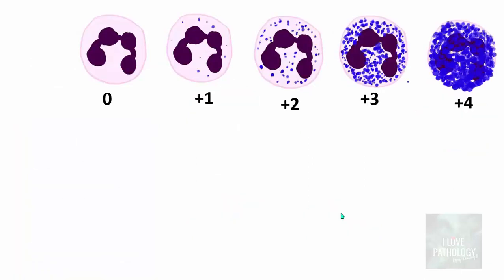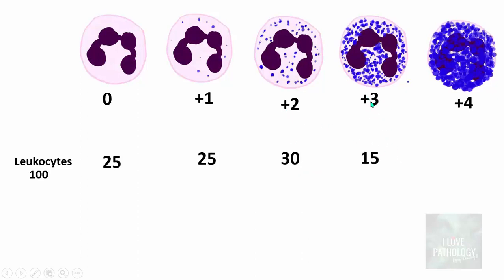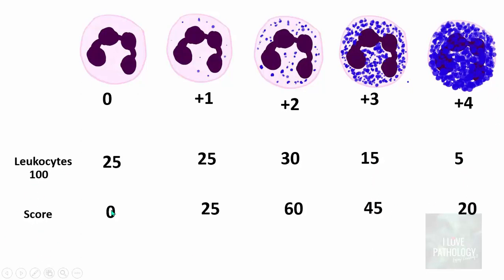Now you know how grading is done. We count 100 cells. For example: 25 cells show no activity — score 0, contributing 0 total. 25 cells show plus 1 — contributing 25. 30 cells show plus 2 — contributing 60. 15 cells show plus 3 — contributing 45. And 5 cells show plus 4 — contributing 20. Adding all these together gives a total LAP score of 150.